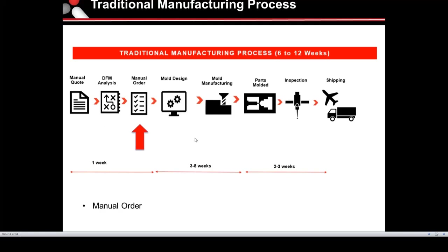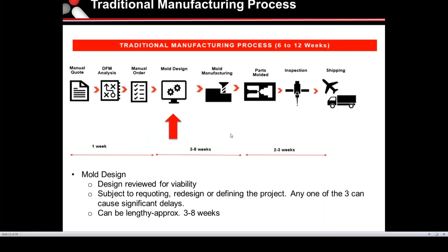Once everything is in agreement with the part and design, the manual order takes place — usually submitting a PO to the supplier, inputting the order, and moving on to mold design. At this stage it can be a lengthy process with a lot of back and forth. The design is reviewed for viability, and at this point you're subject to reordering, redesign, or redefining the project — anything along those lines could cause delays.